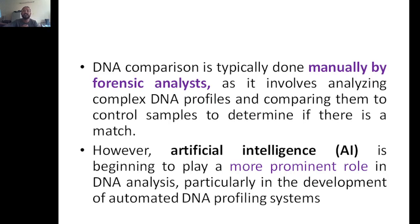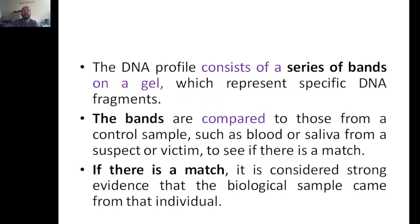DNA comparison has typically been done manually by forensic analysts. However, artificial intelligence is now making its presence felt in every field, and in future we can use AI for DNA analysis as well. The DNA profile consists of a series of bands on a gel representing specific DNA fragments. These bands from the crime scene sample X are compared with those from suspects A, B, and C. If there is a match, it is considered strong evidence that the biological sample came from that individual.